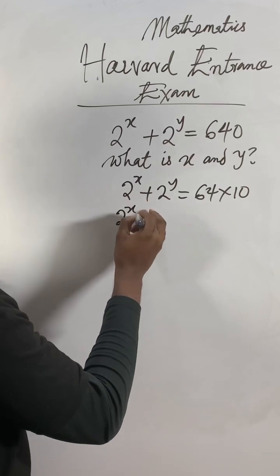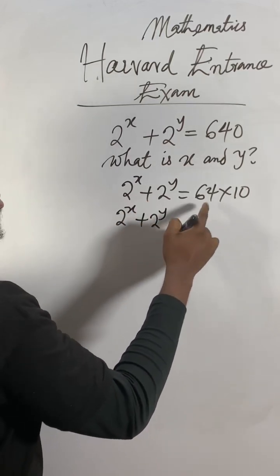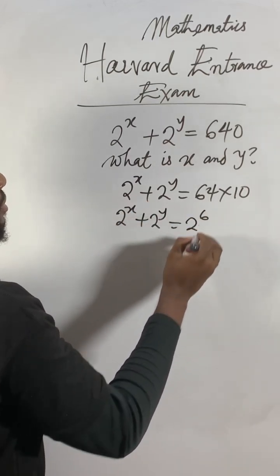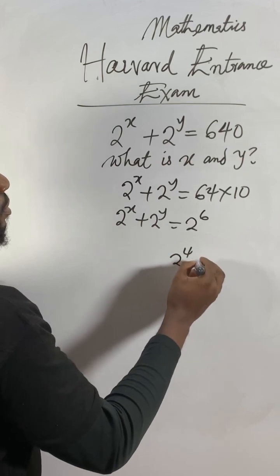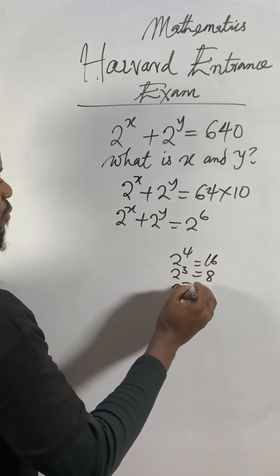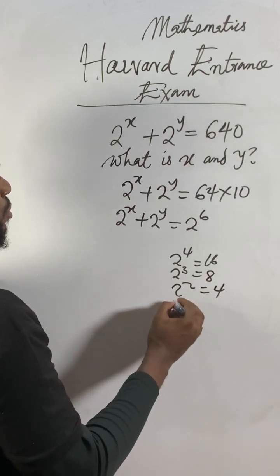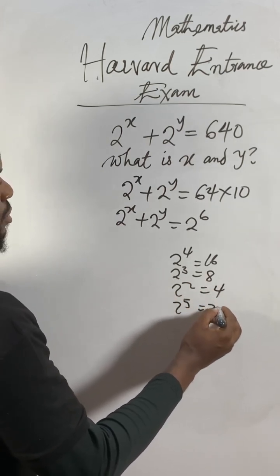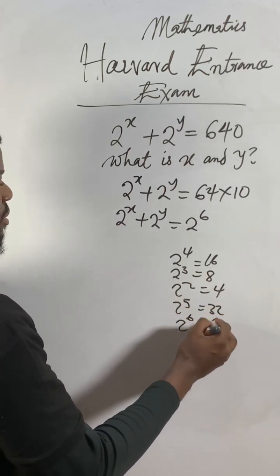So now, this left-hand side will still remain the way it is. For this 64, I know 2 to the power of 6. 2 to the power of 4 is 16. 2 to the power of 3 is 8. 2 to the power of 2 is 4. 2 to the power of 5 is 32. 2 to the power of 6 is 64.